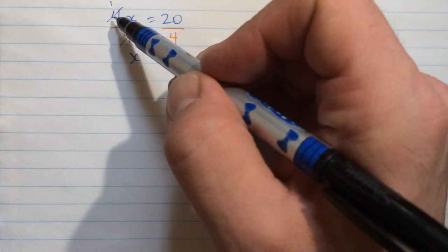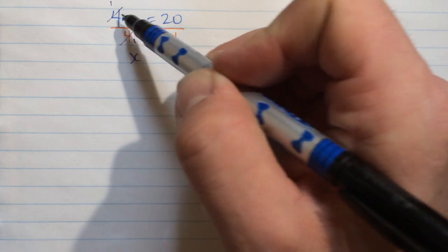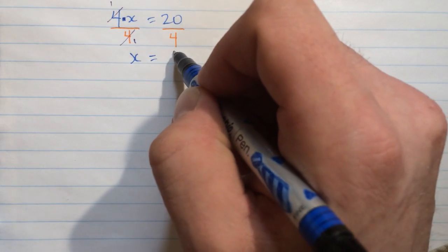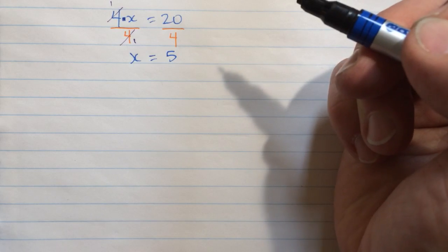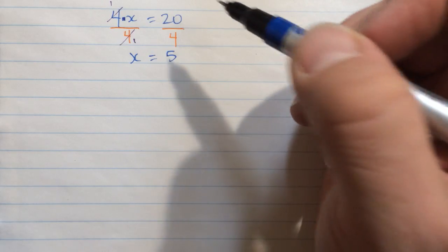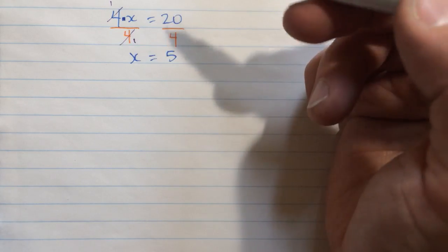So because we've made this happen on purpose, 4 times x and then divided by the same number, we know we're going to end up with just x. That's on purpose. And over here, 20 divided by 4 is 5. We know what the value of x is that makes our original equation true. 4 times 5 equals 20.